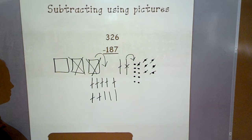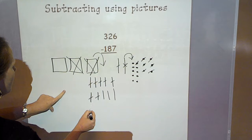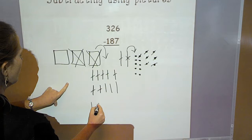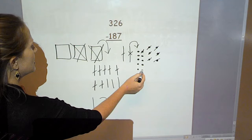I had my total 326 and I took 187 away. I have 100 left. So 1 in the hundreds place. I have 1, 2, 3 tens left, a 3 in the tens place, and 1, 2, 3, 4, 5, 6, 7, 8, 9 ones left. So my answer is 139.